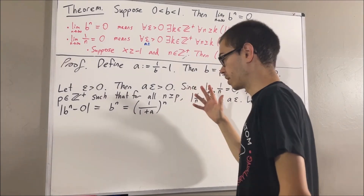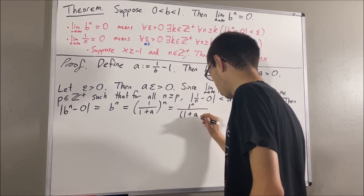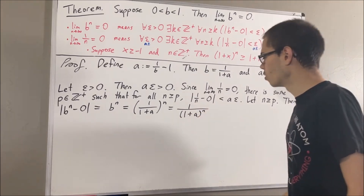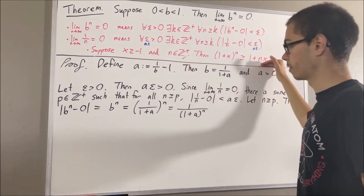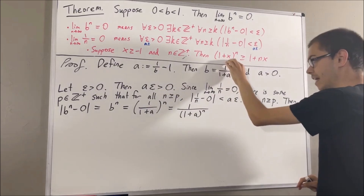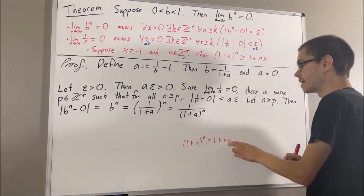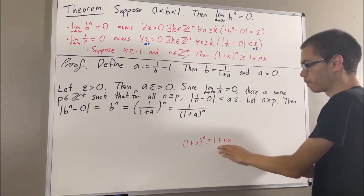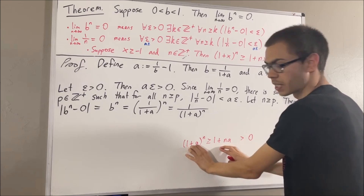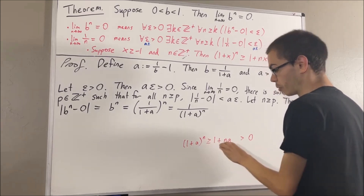Applying the rules of exponents, this is the same as 1 to the power of n over 1 plus a to the power of n, and 1 to the power of n is just 1, so we have 1 over 1 plus a to the power of n. Now we can apply Bernoulli's inequality to the denominator. Taking x to be a and n to be n, we have that 1 plus a to the power of n is greater than or equal to 1 plus na. Since n and a are both positive, na is positive, so 1 plus na is positive. Taking reciprocals of both sides swaps the inequality, giving us that 1 over 1 plus a to the power of n is less than or equal to 1 over 1 plus na.